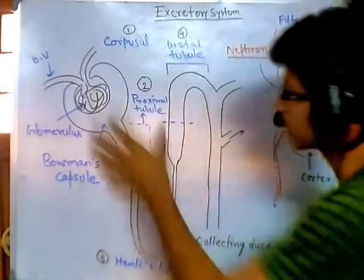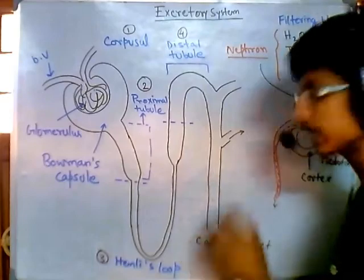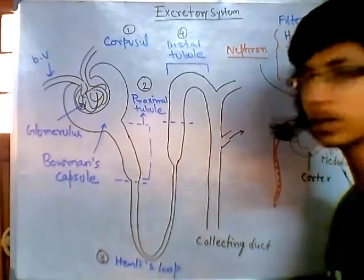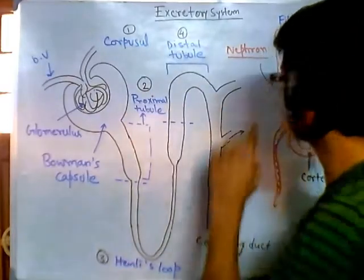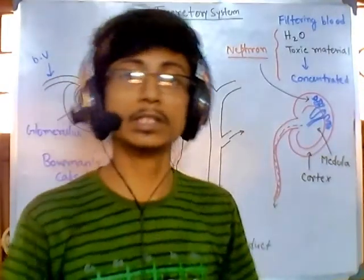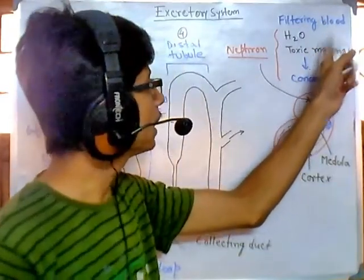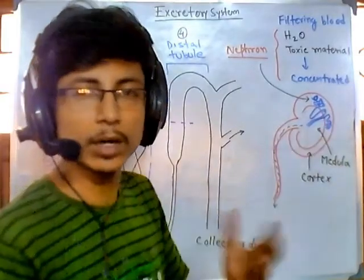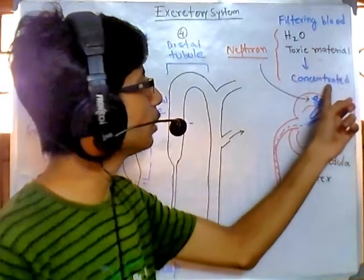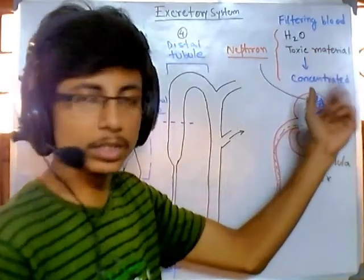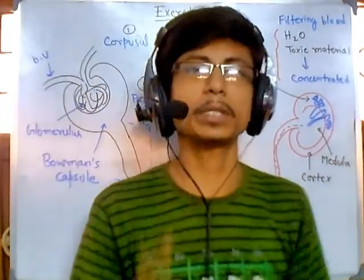All of these sections have a particular functionality to perform. Among them, collecting duct collects the urine. Apart from that, the rest of the parts — the corpuscle and others — each have specific roles. What we need to do, before the discussion, is: filtering of blood, then absorption of nutrients and water. Second thing is concentrating the urine. Fourth thing is collecting it. So these are the major four parts that we need to perform.